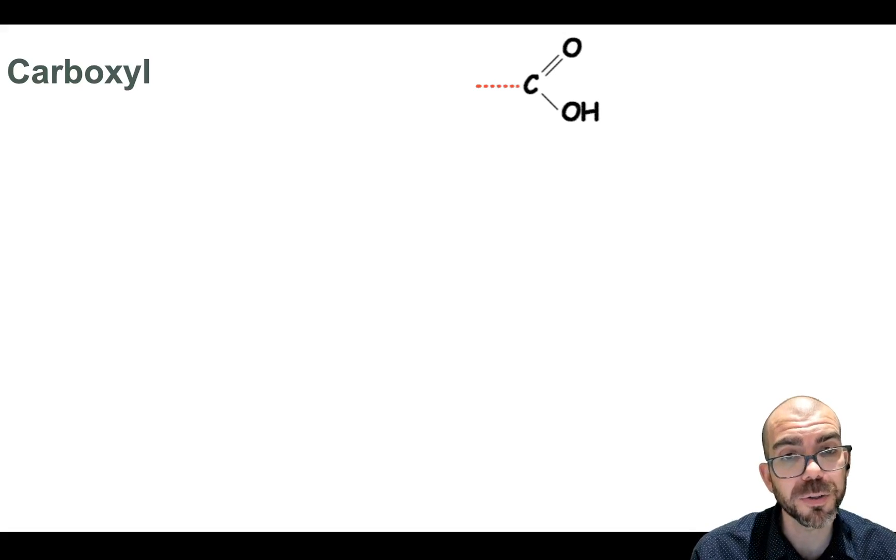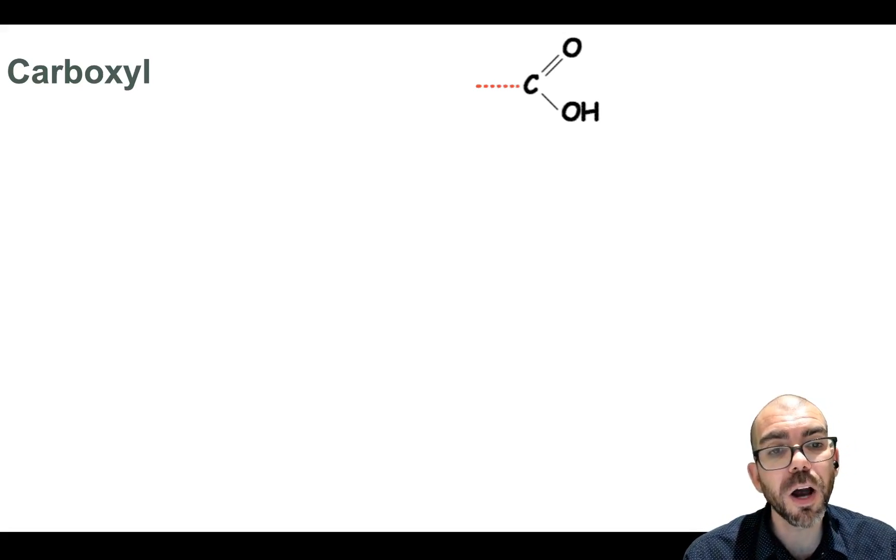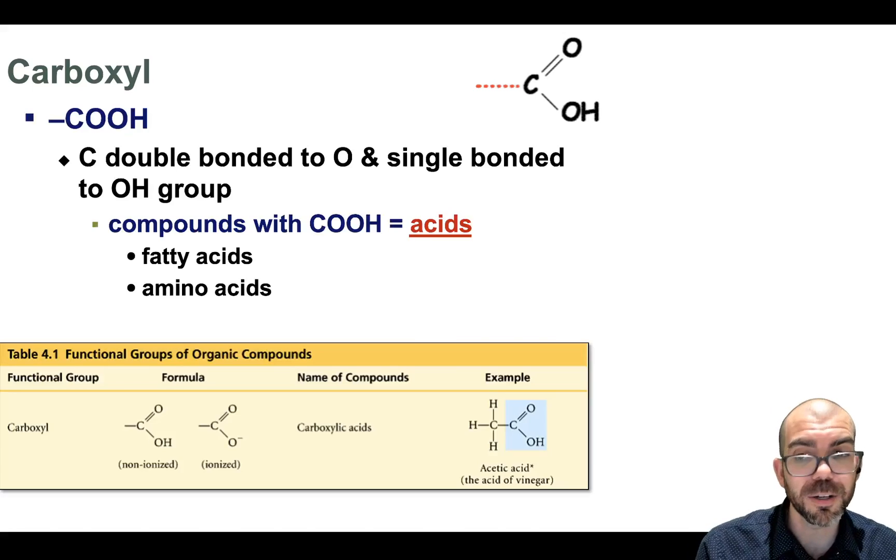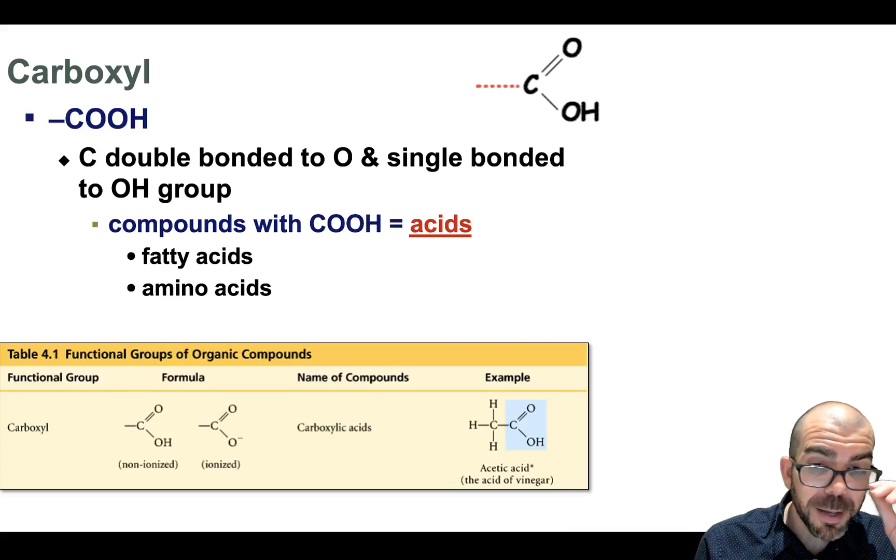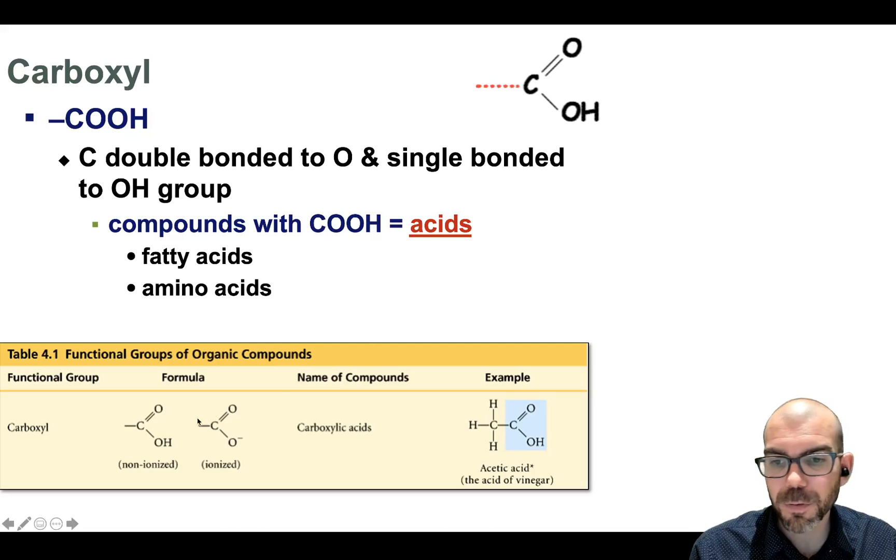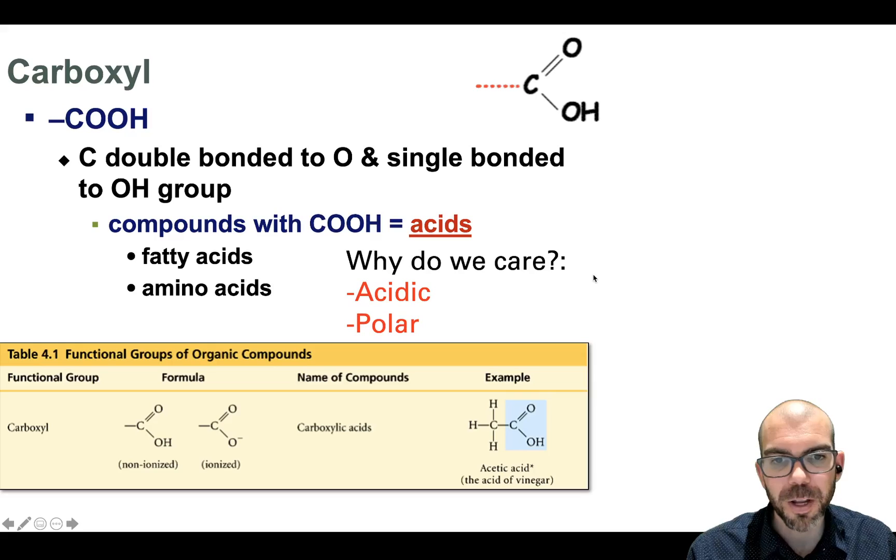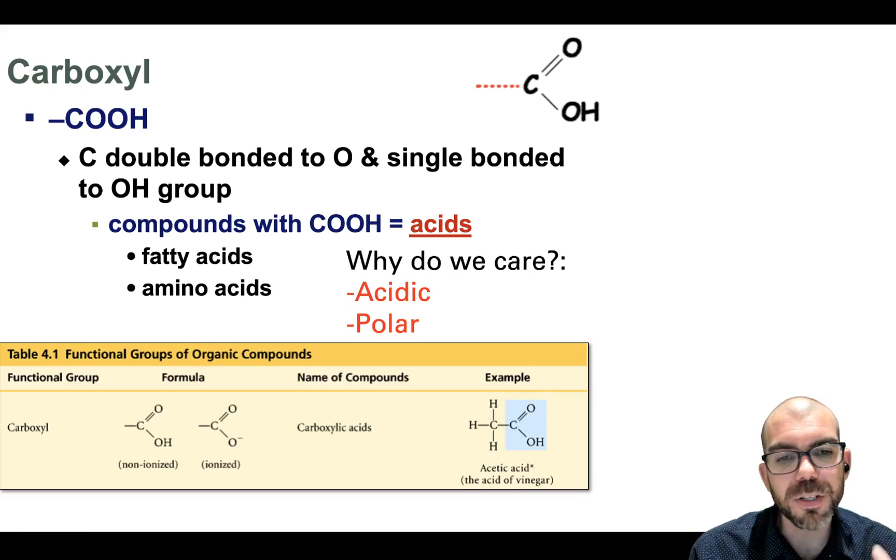Next up is carboxyl. That's a C double bonded to an O with an OH. This bond can make things acidic. For example, here you can see acetic acid, also known as vinegar. It's that C double bond OOH that makes it an acid. Carboxyls show up, they are very common. You'll see them a lot because it's often that molecules will be made acidic or polar by adding on a carboxyl group.